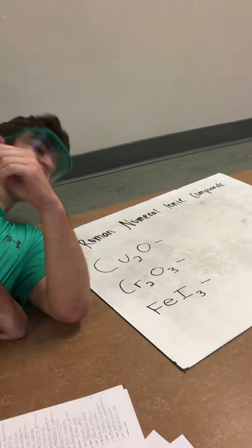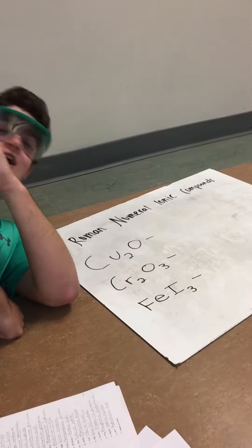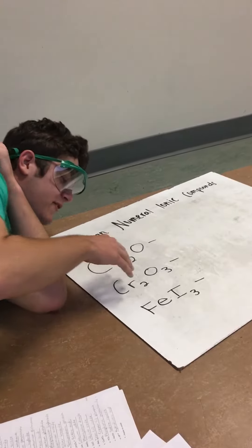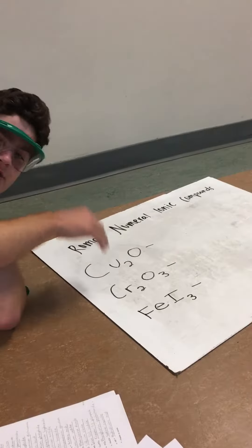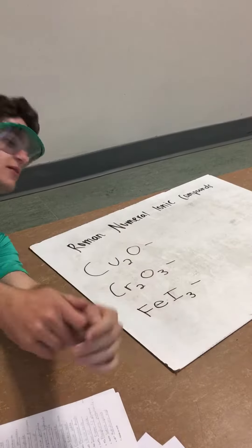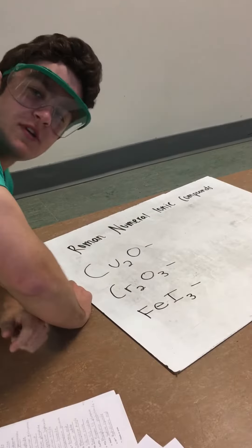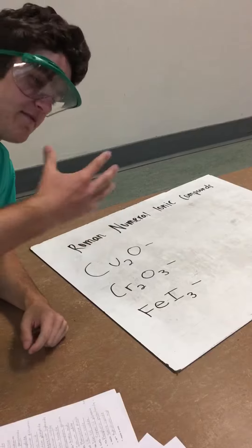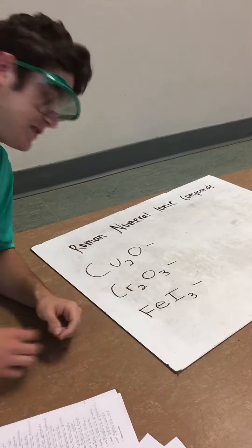Guess what? I'm teaching you about Roman numeral ionic compounds. So what we have here are a group of transition metals and gases, or they're anions, which we'll get into later. Okay, so what are transition metals? They can have a variation of charges, most of them at least.